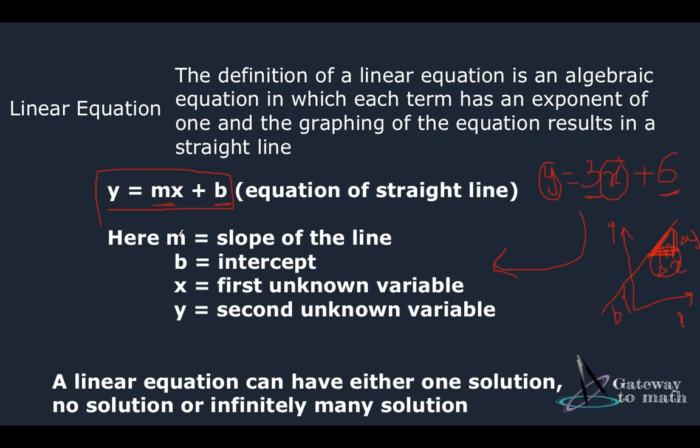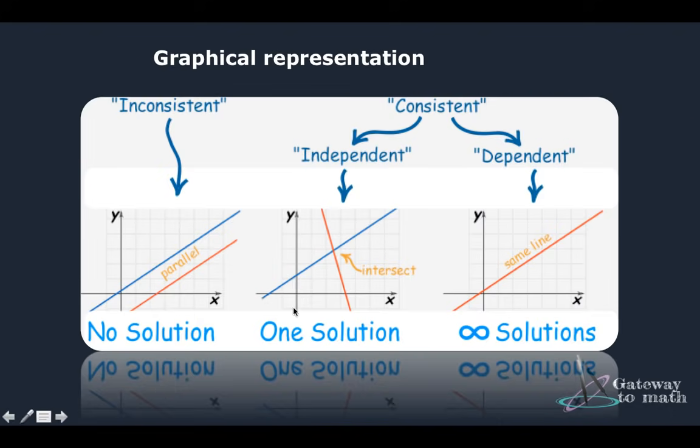So now a linear equation can have either one solution, no solution, or infinitely many solutions. Let's see how we can identify the same. On a graphical note, if two lines are parallel, obviously they have no solution. If two lines intersect at one point, they have one solution. If the points actually just coincide with each other, then obviously they have infinite number of solutions because the two lines have coincided with each other.